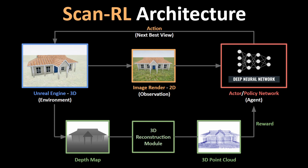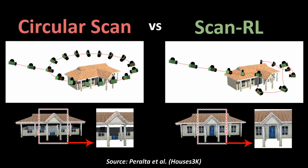This method is better than simply scanning a house naively using a circular path because it is also able to account for occluded or hidden parts of the monument. For example, in this case, the drone is able to account for the hidden parts of the house that are occluded by the roof. As shown in the paper, this RL-based scanning method covers 97% of the house compared to just 87% for manual scanning.